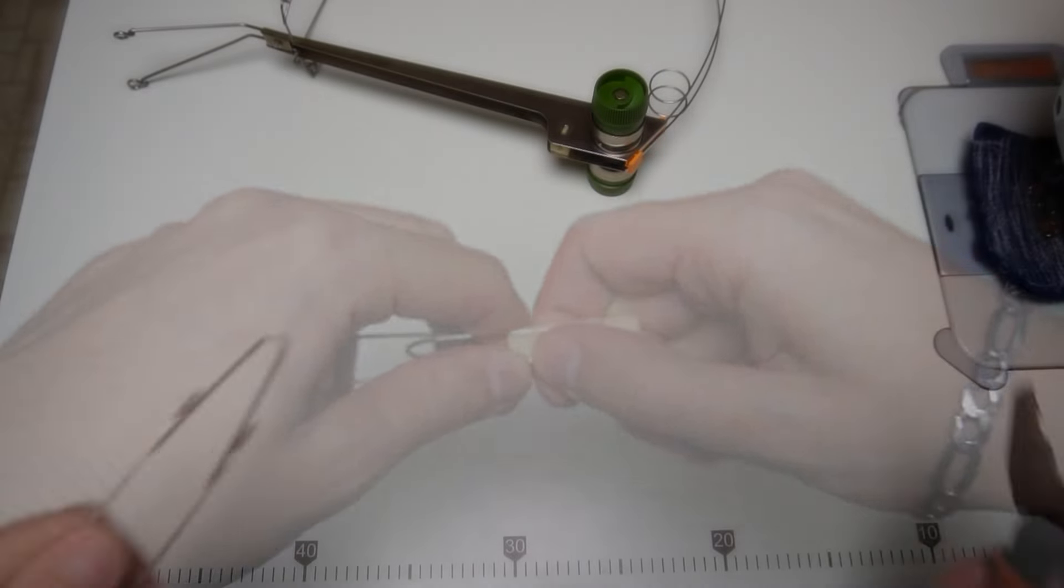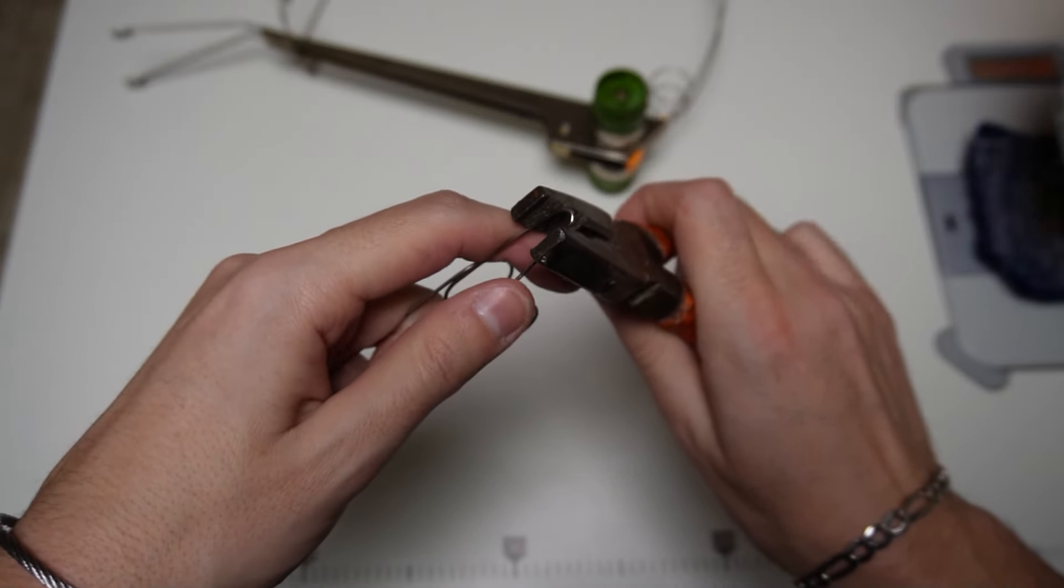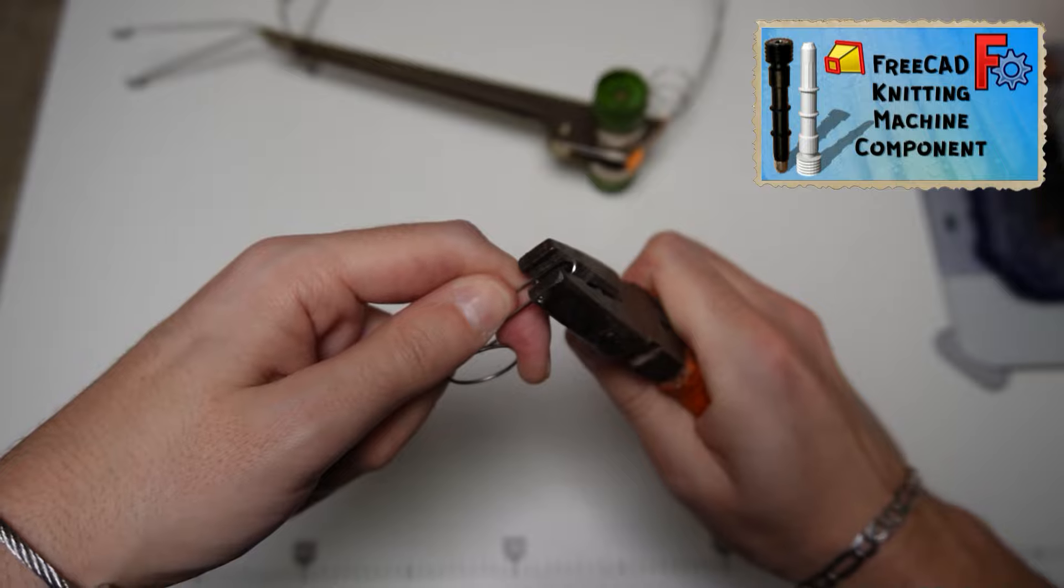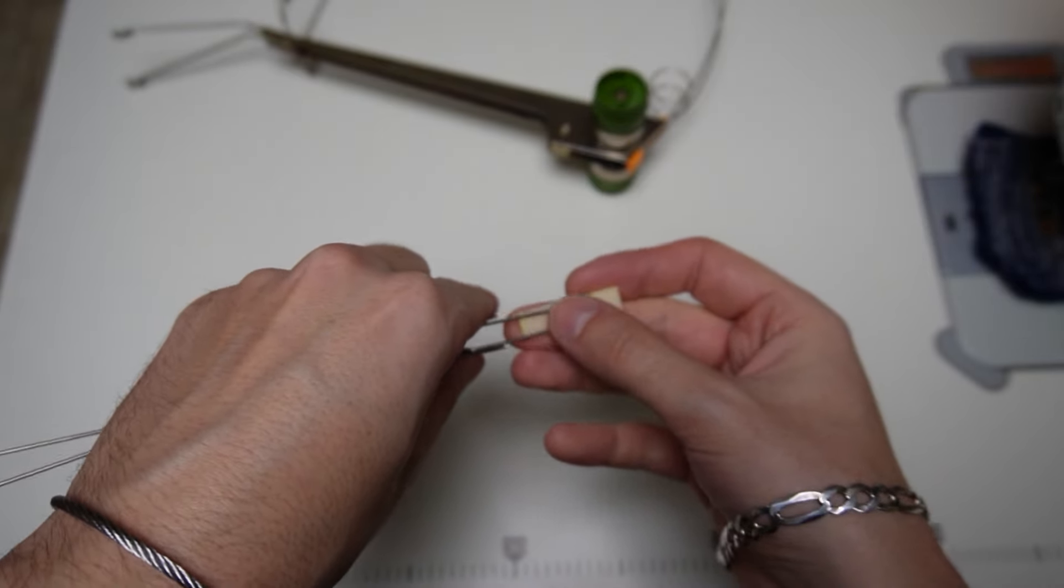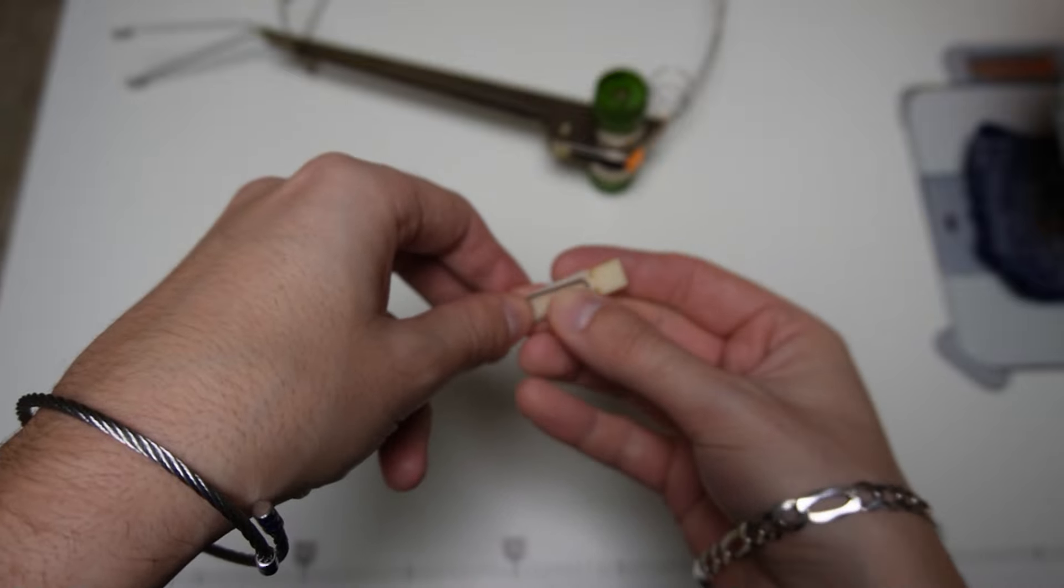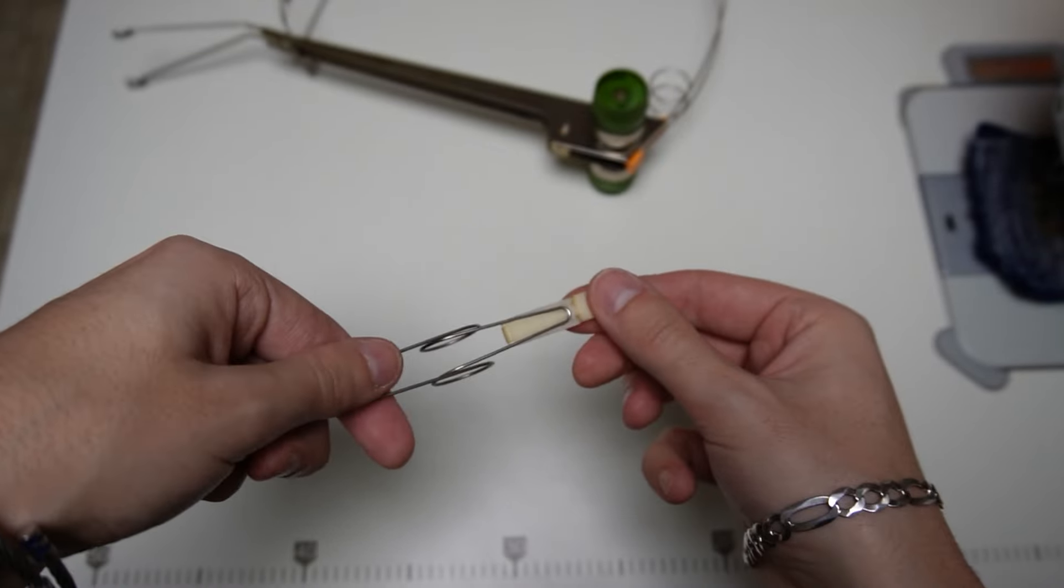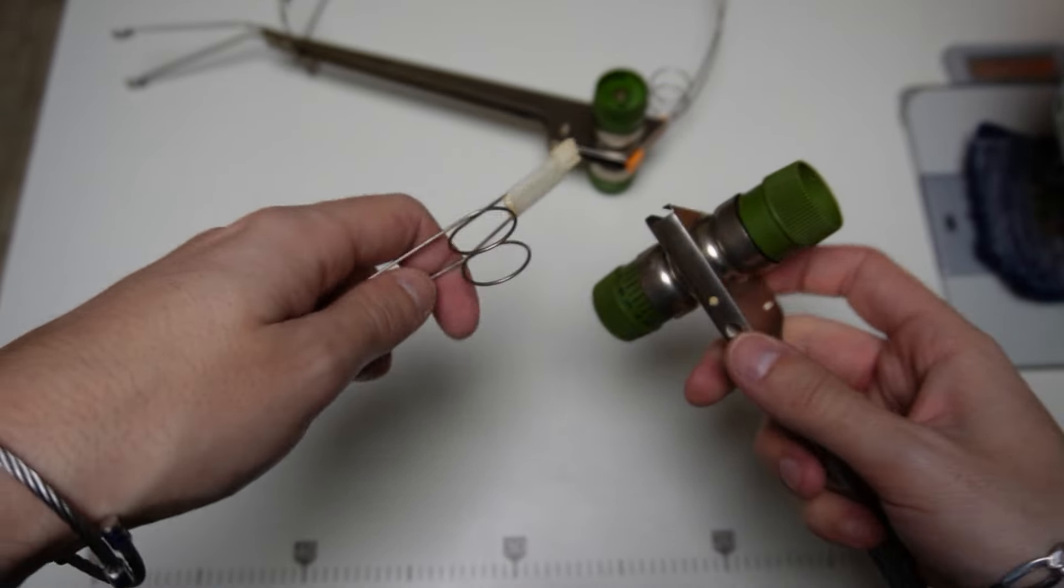So I'll use pliers and slightly squeeze the metal. Now I'll try again. After the wire is in the slot, you can insert it into the mast.